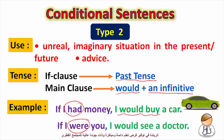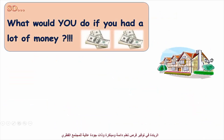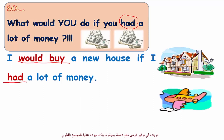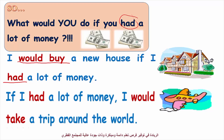Another example for giving advice: 'If I were you, I would see a doctor.' We use 'were' with all persons in type two. Now look at this situation — what would you do if you had a lot of money? First picture: 'If I had a lot of money, I would buy a new house.' Next: 'If I had a lot of money, I would take a trip around the world.' Both use would plus infinitive and past simple — type two.